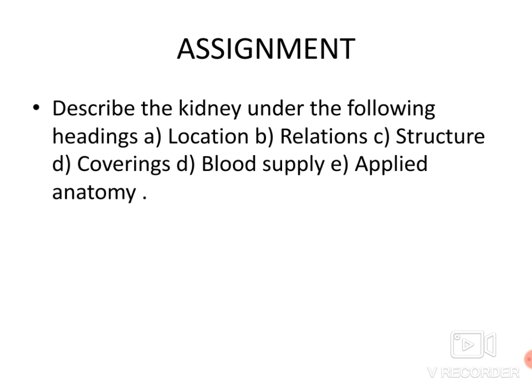In summary, we have covered the gross features of the kidney: its location in relation to abdominal regions; its anterior and posterior relations for both right and left kidneys; its macroscopic structure as seen in coronal section; its coverings — fibrous capsule, perirenal fat, renal fascia, and pararenal fat; its arterial and venous blood supply; and applied aspects including the intravenous pyelogram.